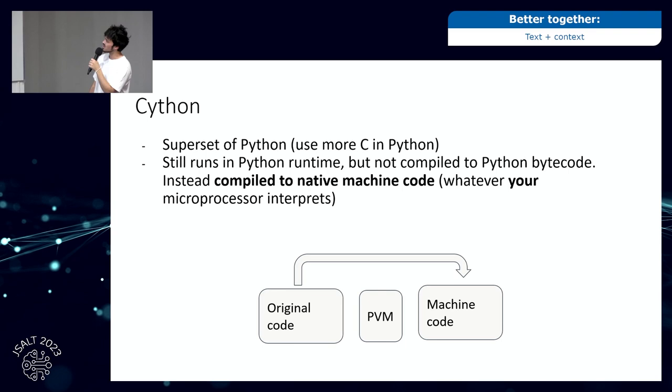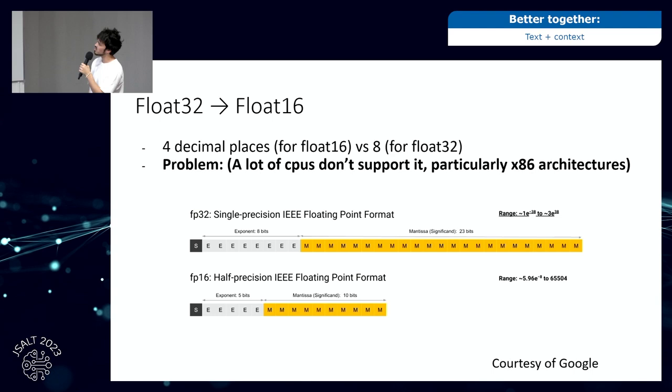Cython is basically an extension of the Python library to integrate it with C. We couldn't just put it all in PyTorch for reasons I'll discuss. This is good practice with the math we're doing in ProNE, and we're running on CPU. The code still runs in Python runtime but not in Python bytecode, so you bypass the Python virtual machine, giving you some speed-ups. Changing the data type is just using less space in these huge embedding matrices — using fewer digits for each number.